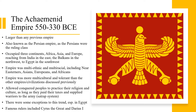The Achaemenids allowed conquered peoples to practice their religion and culture, as long as they paid their taxes and supplied warriors to the Achaemenid army via the satrap system. There were, of course, some exceptions to this trend, especially in places like Egypt, which frequently rebelled against the Achaemenid Empire. Some famous Achaemenid rulers included Cyrus the Great and Darius I.